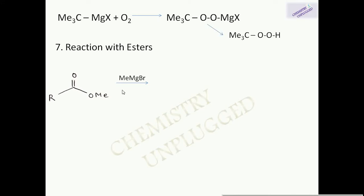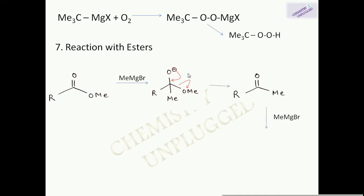Synthetic application 8: reaction with esters. In the first step, the MgBr of the Grignard reagent coordinates to oxygen and the alkyl group attaches to the carbonyl carbon. The resulting alkoxide intermediate collapses — the negative charge shifts to form a double bond and the leaving group departs — giving a ketone intermediate. This ketone then reacts with a second equivalent of Grignard reagent to give a tertiary alcohol. So one ester molecule requires two molecules of Grignard reagent.